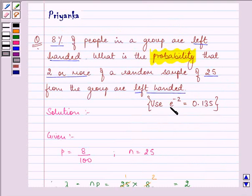Now, in the question, we are given to use the value of e raised to the power minus 2 as 0.135.